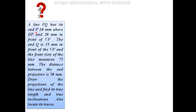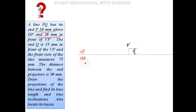A line PQ has its end P 10mm above HP and 20mm in front of VP. We are working in the first quadrant. We mark 10mm above HP and 20mm in front of VP to locate point P and P-dash.